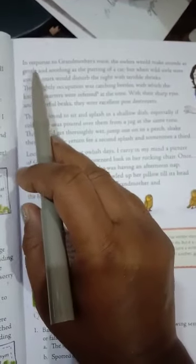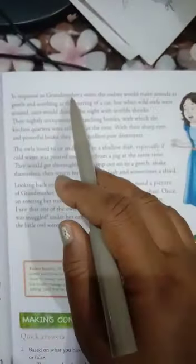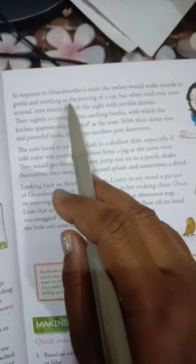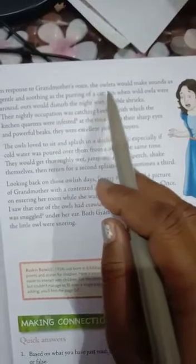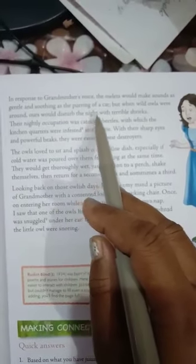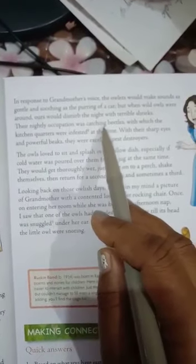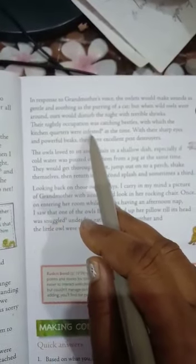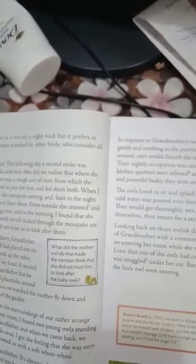Now, next page. In response to grandmother's voice, the owlets would make sound as gentle and soothing as the purring of a cat. But when wild owls were around, ours would disturb the night with terrible shrieks. Their nightly occupation was catching beetles, with which the kitchen quarters were infested. Infested means full of beetles.